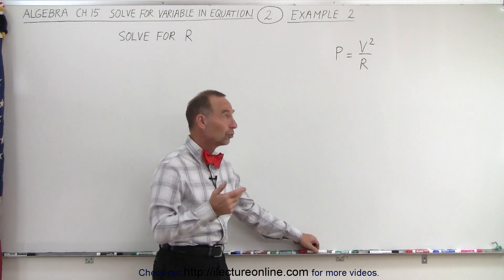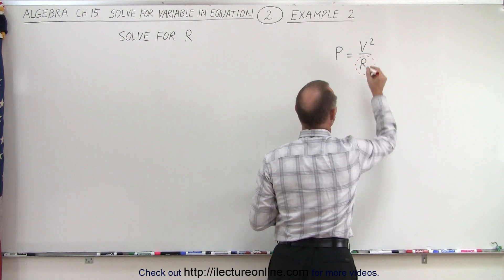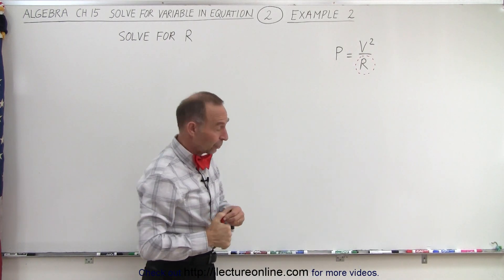So again, not a bad idea to draw a little circle around the variable you're trying to solve for. And then again we realize, well, that looks like A over B equals C over D.